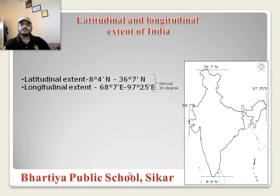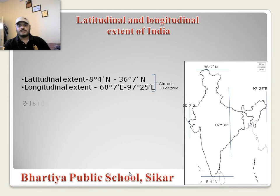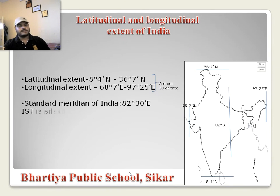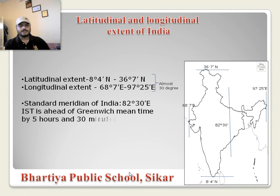Another important longitude for India is 82 degree 30 minute east. This is the standard meridian of India. This meridian passes through Mirzapur, Allahabad. From Mirzapur we are ahead of the Greenwich line by 5 hours 30 minutes, so the time of India is ahead of Greenwich time by 5 hours 30 minutes.